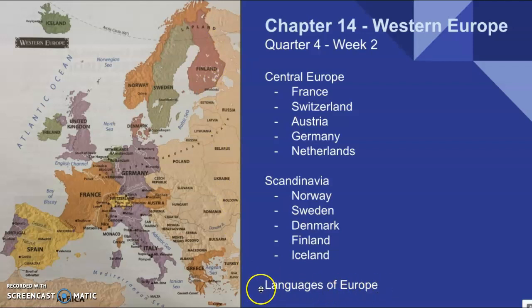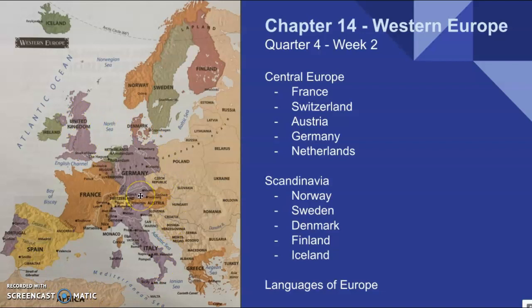We won't get to this section this week, but we'll finish up Chapter 14 next Monday with our last section. We'll talk about the languages of Europe and the three main groups they're split into. You'll see that a lot of the Romance languages are from around the Mediterranean, the Germanic languages from around Germany, and the Slavic languages from that area as well. There's also a subsection of Germanic languages — the Scandinavian languages — which go with our Scandinavian countries. It's interesting to see how they're similar, different, and where they originally came from.